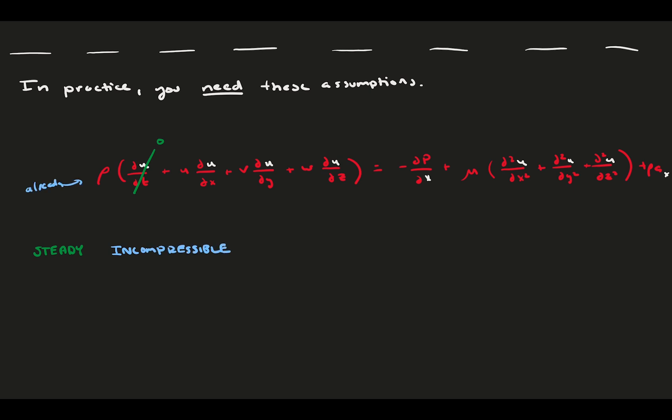which is an assumption that we already made in the derivation that allows density to go out front. Fully developed lets us cross out some ddx terms of velocity.